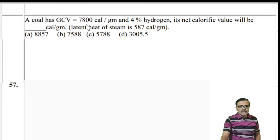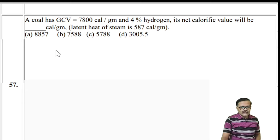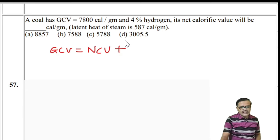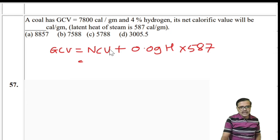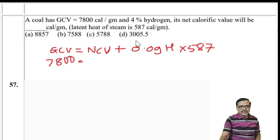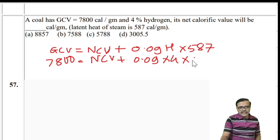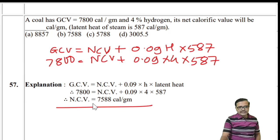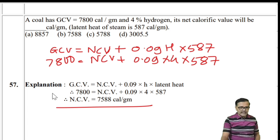Numerical: A coal has GCV = 7800 kcal/kg and 4% hydrogen. NCV = GCV − 0.09 × H × 587 = 7800 − 0.09 × 4 × 587 = 7800 − 211.32 ≈ 7588 kcal/kg. The answer is 7588 (second option).